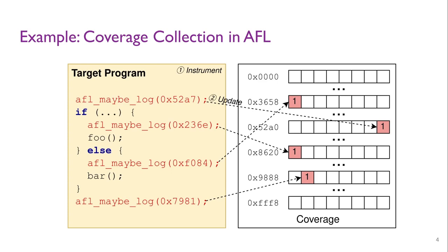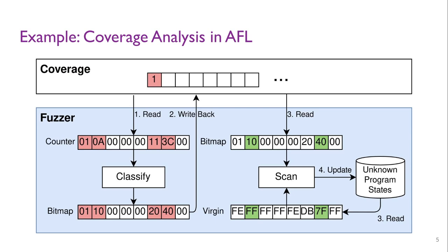After the target program completes execution, AFL reads the coverage counters to classify them into a bitmap of features. Here, each 8-bit counter with non-zero value is mapped to 8 possible features. The features are represented as a bitmap, where each feature corresponds to one of the 8-bits inside the 8-bit counter. The classified result is written back to the coverage region.